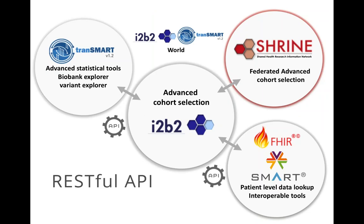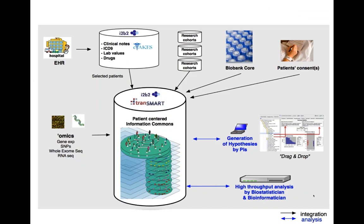In this I2B2 TransMart world, the way we've been doing this integration is to use I2B2 to store all the data and enable advanced cohort selection, and to use TransMart as an advanced statistical tool — Biobank Explorer, Variant Explorer — accessing this data. Once you're part of this ecosystem, you can easily have access to other tools which are 100% compatible with I2B2, like Shrine, in order to do federated advanced cohort selection between multiple I2B2 installations across different institutions. The whole idea is to integrate and create a patient-centric information commons by integrating any kind of complex clinical data.